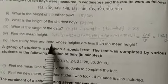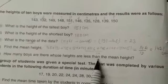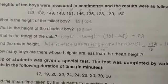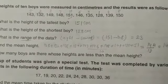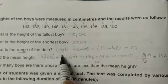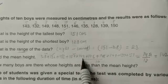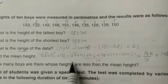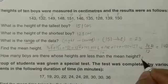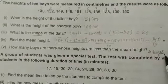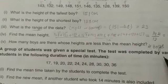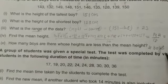How many boys are there whose heights are less than the mean height? Mean height is 142.1. So less than 142.1, which numbers are smaller? You have 1, 2, 3, 4 numbers. So 4 boys are there whose height is less than 142.1 centimeters. Clear? Let's do question number 3.